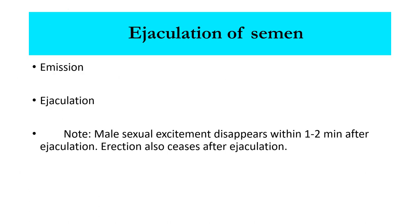Ejaculation is a two-part spinal reflex involving emission — the movement of semen into the urethra — and ejaculation proper — the propulsion of semen out of the urethra at orgasm. The afferent pathways are mostly fibers from touch receptors in the glans penis reaching the spinal cord through the internal pudendal nerves. The spinal reflex centers are in the upper sacral and lowest lumbar segments, and the motor pathways traverse the first to third sacral roots and the internal pudendal nerves. Male sexual excitement disappears within one to two minutes after ejaculation, and erection also ceases.